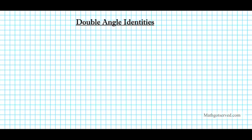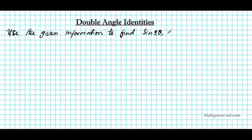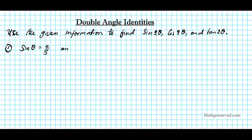Use the given information to find three trig functions: sine 2θ, cosine 2θ, and tan 2θ. For question number one, we're going to be looking at sine θ equals 2 over 5, and θ is between π/2 and π — that is, π/2 < θ < π.